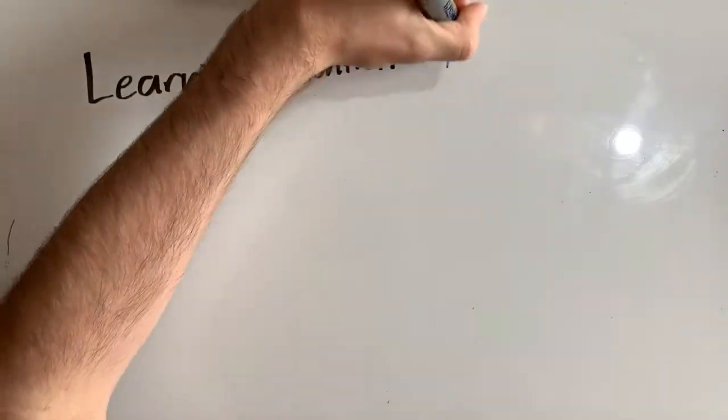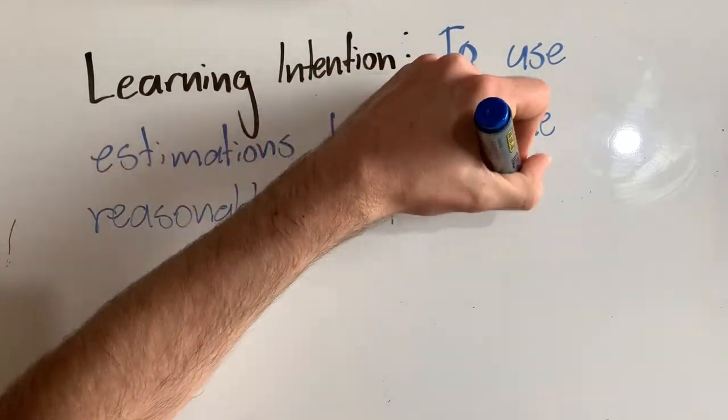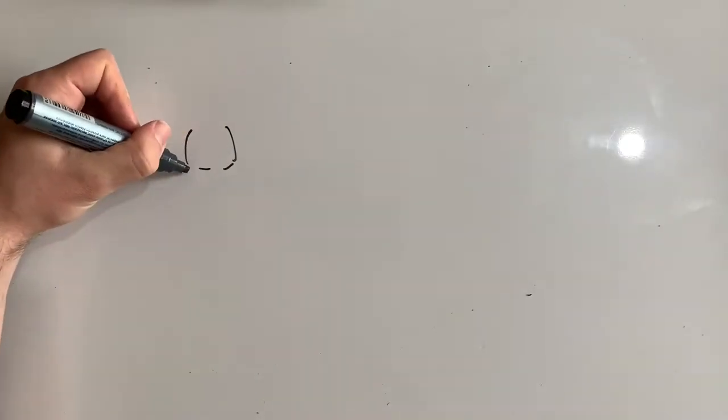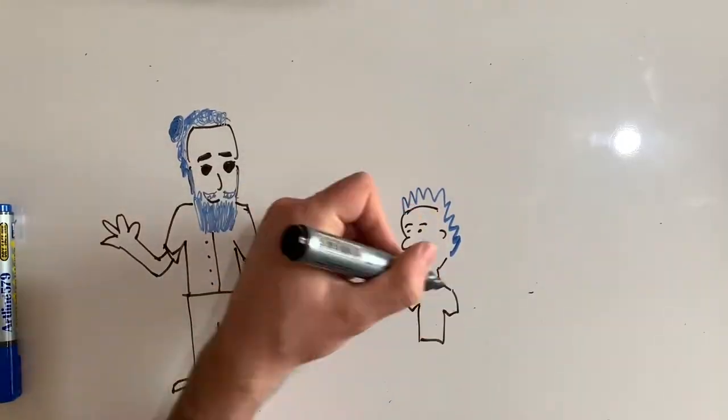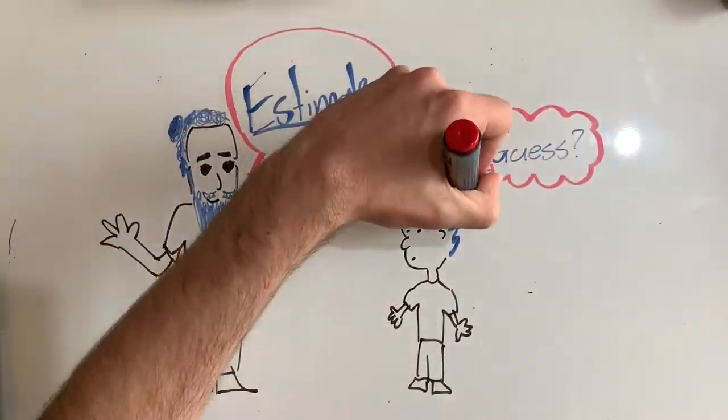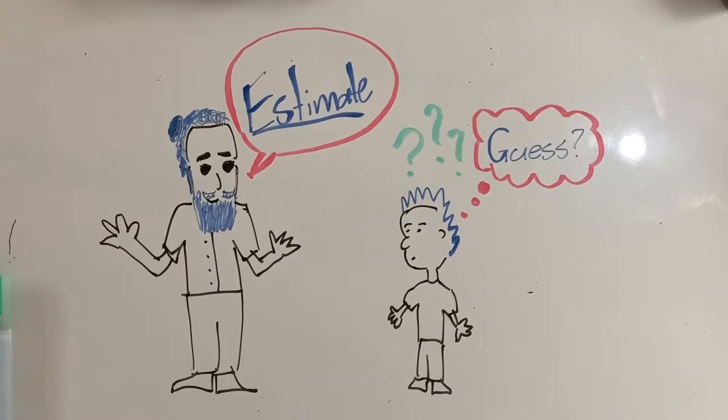In this video we are learning to use estimations to check the reasonableness of our answers. Sometimes teachers like to throw in questions about estimation and you might be thinking, what do you mean by estimate? How do I do that? Do you just mean take a wild guess? Estimating is getting an answer which is approximate or close to the actual answer — it's going to be used as a guide. The reason why we use estimating is to check the reasonableness of our answer. If we're doing a tricky sum and we want to make sure that our answer is good and reasonable, one way we can check is by making an estimation.